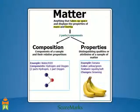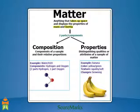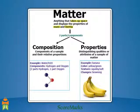The different types of matter can be distinguished through two components: composition and properties. The composition of a matter refers to the different components of matter along with their relative proportions. The properties of matter refer to the qualities and attributes that distinguish one sample of matter from another.